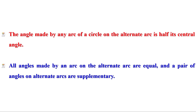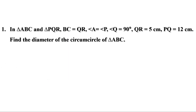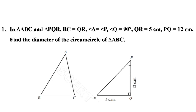Now let us check the homeworks. First problem: in triangle ABC and triangle PQR, BC equal to QR, angle A equal to angle P, angle Q equal to 90 degrees, QR equal to 5 cm, PQ equal to 12 cm. Find the diameter of the circumcircle of triangle ABC.